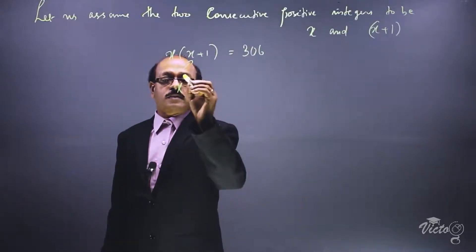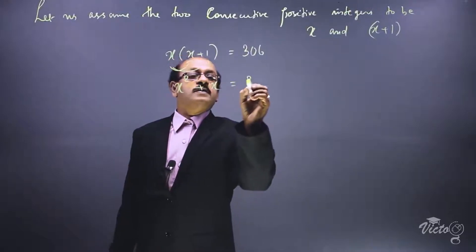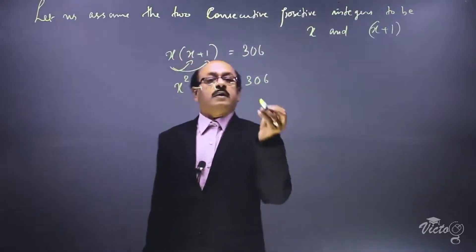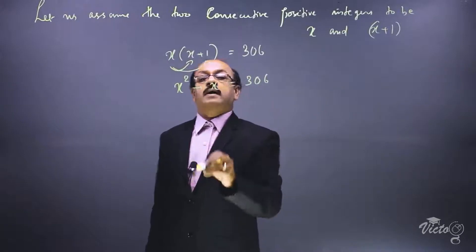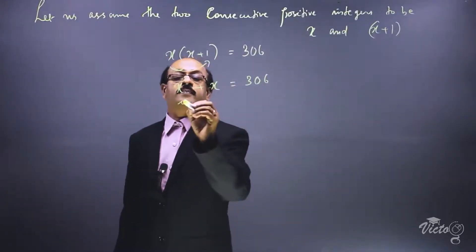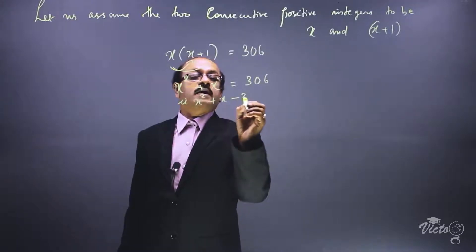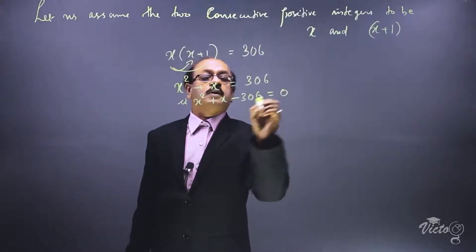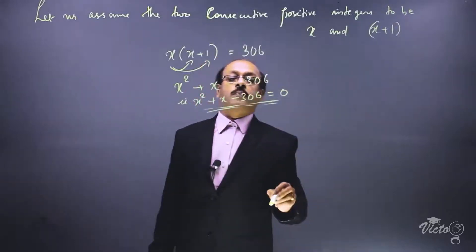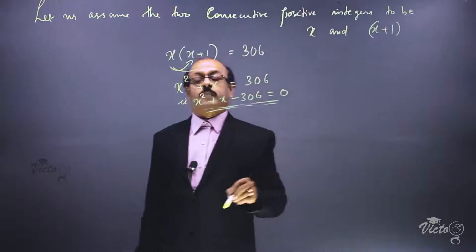Removing the bracket: x into x gives x square, plus x into 1 gives x, equal to 306. Bringing 306 to the left side, the equation becomes x square plus x minus 306 is equal to 0.